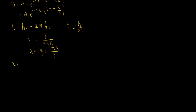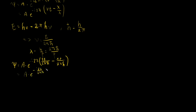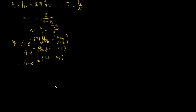Therefore, substituting these relations, our equation becomes psi equals A times e to the negative i over ℏ times (Et minus xp). This equation represents a mathematical representation of an unrestricted particle of total energy E and momentum p moving along the positive x direction.